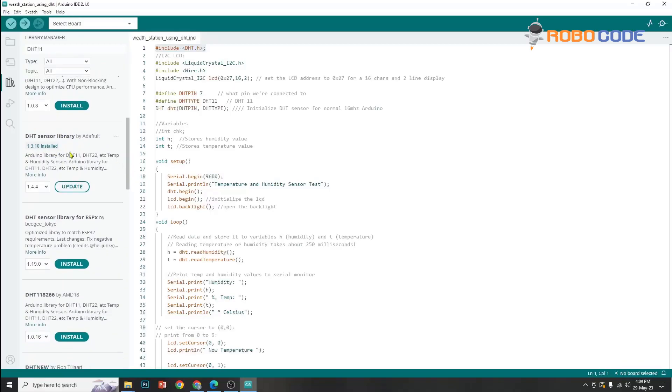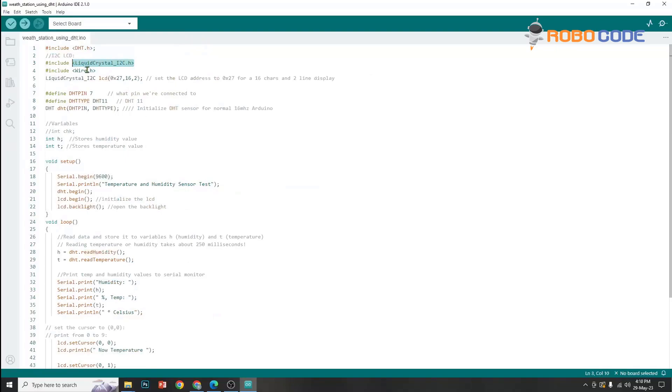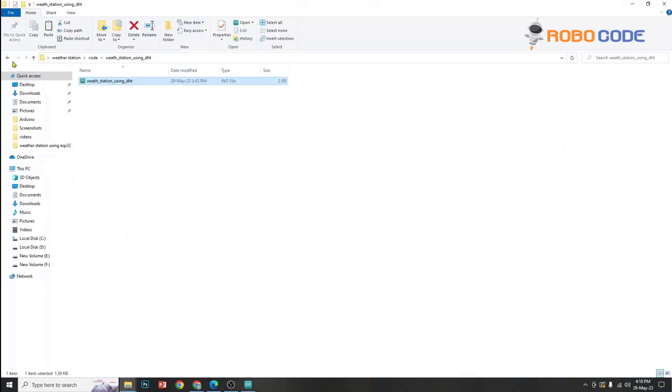If it is not installed then you can click the install button. In our case we have already installed so you can see the update button. You can check the version, it should be 1.4.4 or maybe a later version would be fine. Once that is done, we will install liquid crystal library. The zip file we have given you inside the library folder.